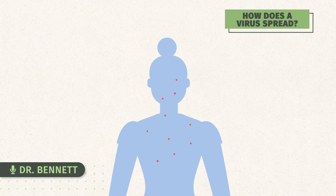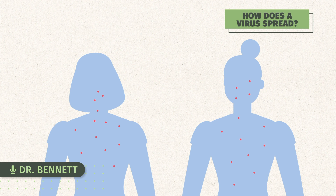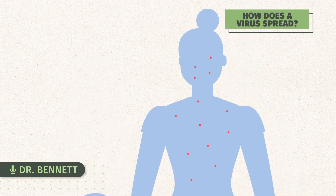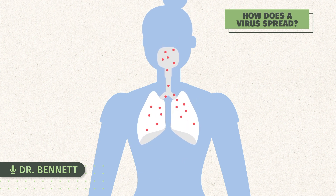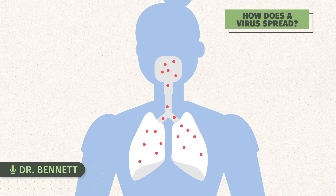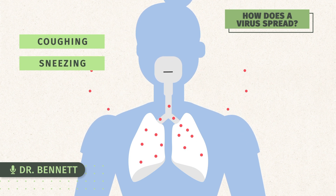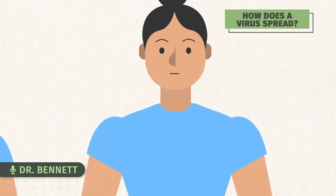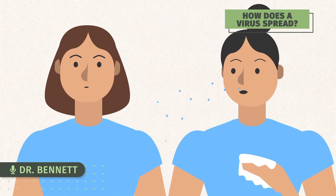Viruses spread between hosts in ways that are basically determined by the kinds of cells they infect. For example, viruses that infect respiratory cells like SARS-CoV-2 are spread through the products of our respiratory system. Coughing and sneezing and the droplets we produce from deep in our lungs or even in our upper respiratory tract are key elements for how this virus spreads between people.